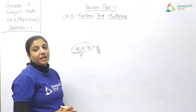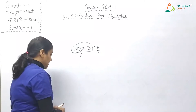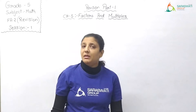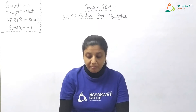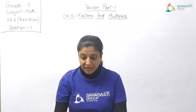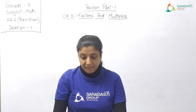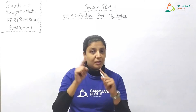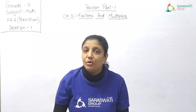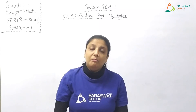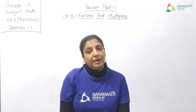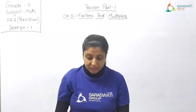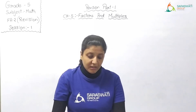The answer — the product — is the multiple. Multiples of a number are obtained when the number is multiplied by counting numbers. The numbers being multiplied are called factors. When numbers multiply together, what we get is called the multiple.